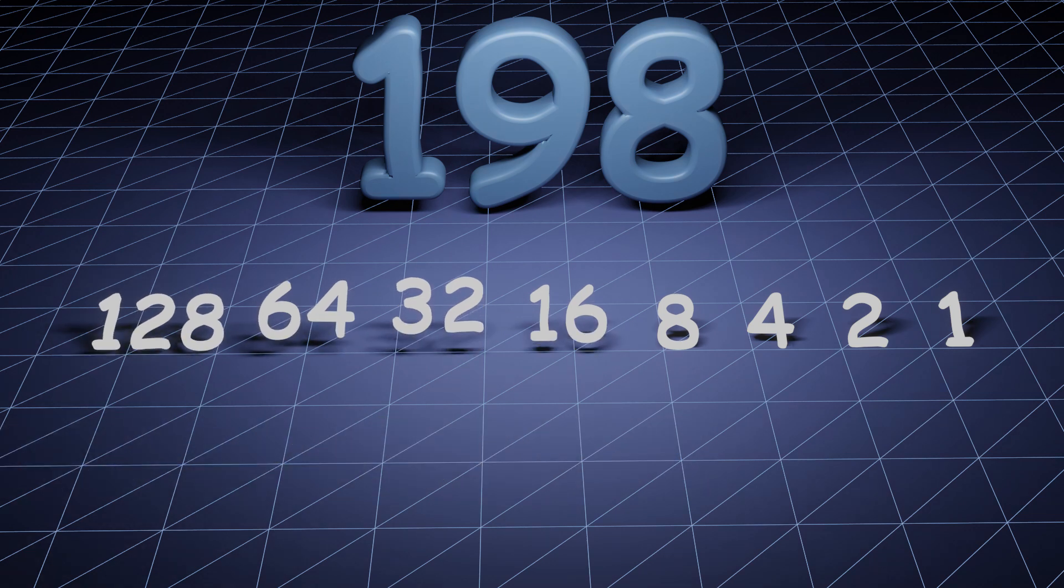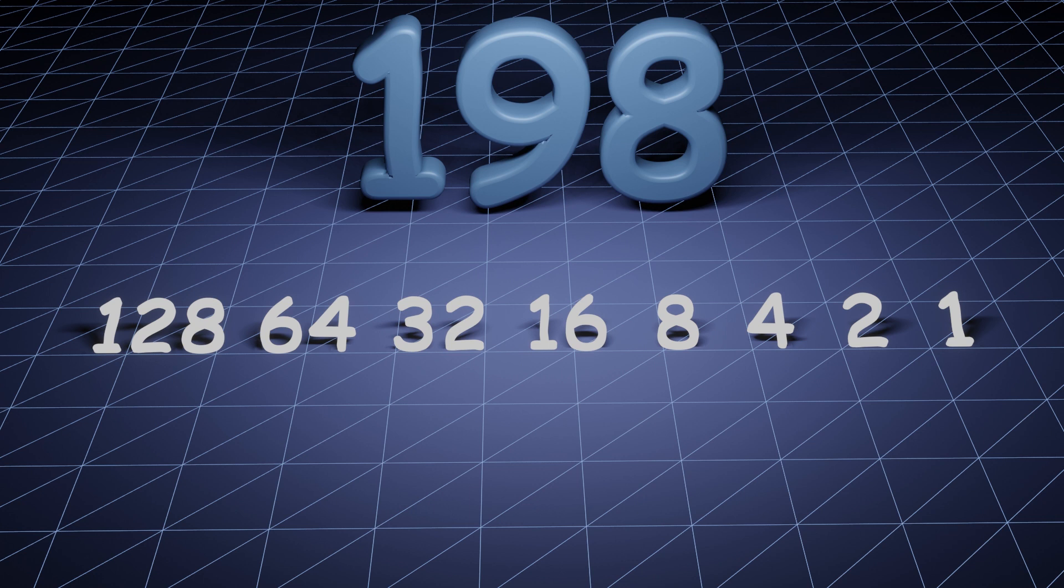With our sequence of numbers we can start to construct our binary number. We do this by seeing what numbers in our sequence can be added together to equal 198.